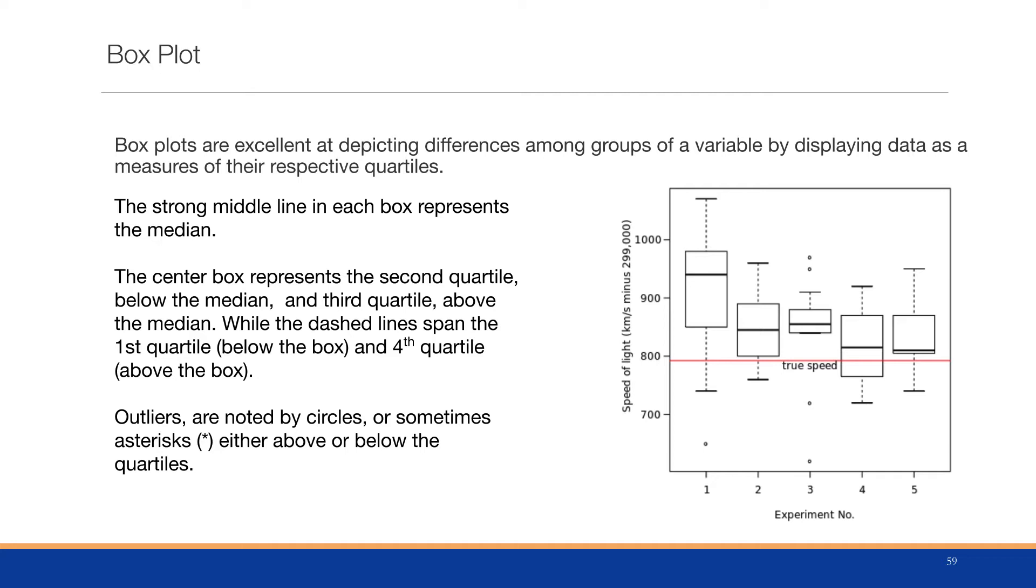The dashed lines represent the first quartile and fourth quartile below the box and above the box. Outliers are denoted by circles or sometimes asterisks either above or below those quartiles. Remember those are done using the Tukey fence method.